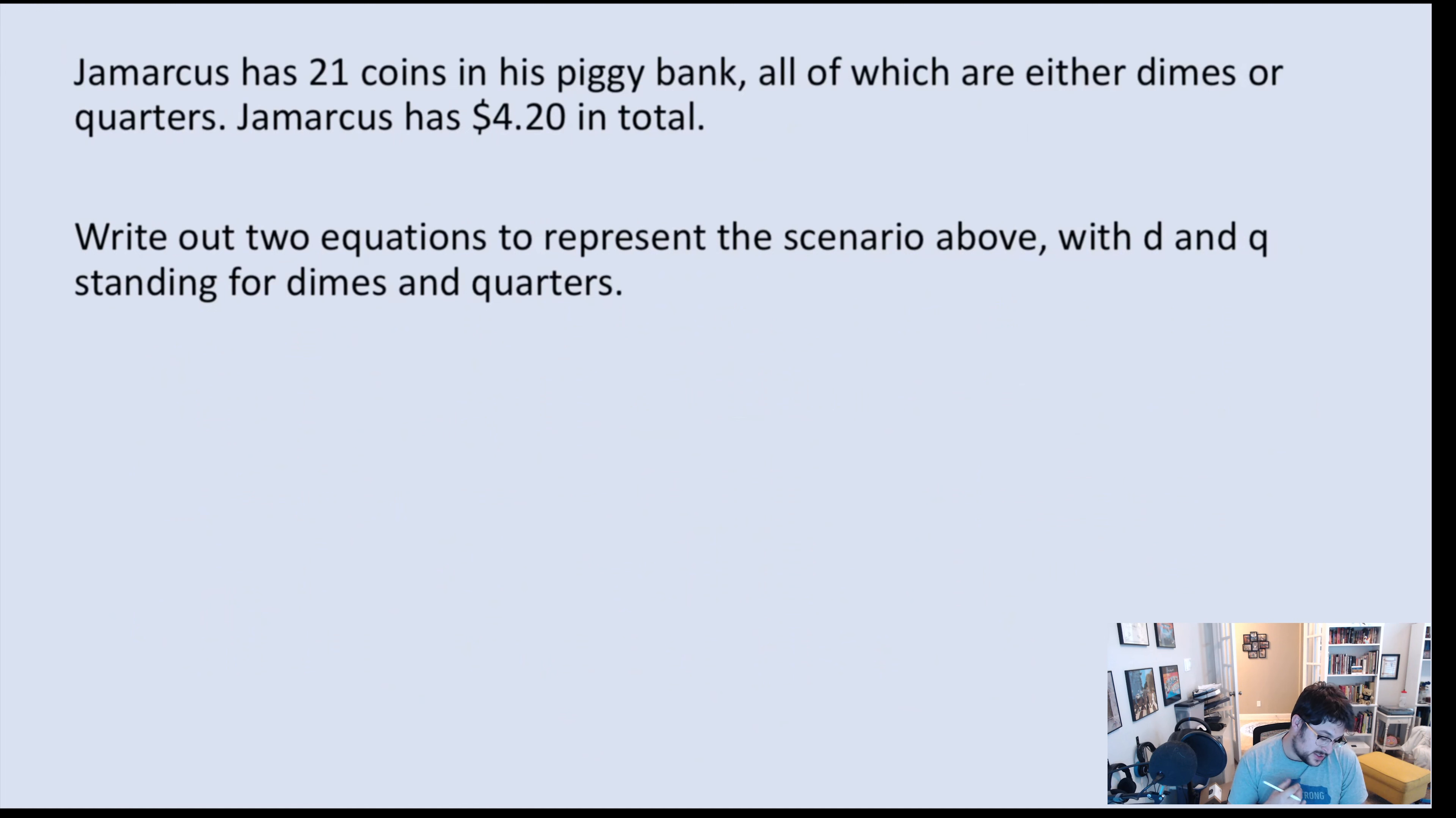Let's try one. Jamarcus has 21 coins in his piggy bank, all of which are either dimes or quarters. He has $4.20 in total. So if he has 21 coins, that's a quantity equation. And we're looking at dimes or quarters. So let's start with our variables. D equals the number of dimes. Q equals the number of quarters. Let's now do the quantity equation. 21 coins. We're doing D plus Q equals 21. Let's do the value equation. That equals $4.20. Dimes are worth 10 cents, so 0.10 dimes. Quarters are worth 25 cents, 0.25 quarters. Equals a total of $4.20. And we're done. That's it. That's all there is to it. Just plug and play.